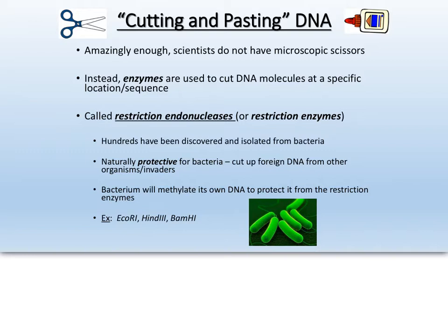Our first step is to talk about how you cut and paste DNA. Surprisingly enough, scientists don't have tiny microscopic scissors and bottles of Elmer's glue to cut up chromosomes and put them back together. The way they do this is with enzymes — enzymes able to catalyze a reaction that will cut a DNA molecule at a very specific sequence or location. We call these restriction endonucleases, or restriction enzymes, sometimes referred to jokingly as ninja enzymes because they can slice and dice and cut up the DNA.